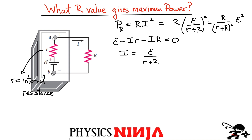Let's do some test cases. Case one: what if R equals zero? If you substitute R = 0, you get zero in the numerator, so the power dissipated by the load is zero. That's not a maximum.